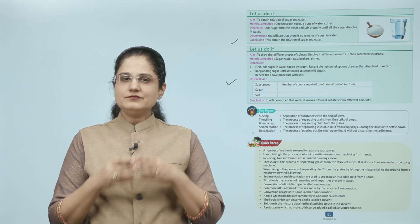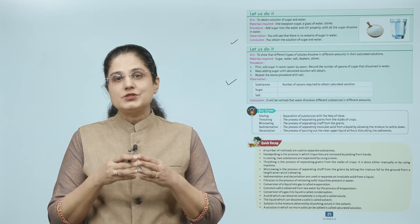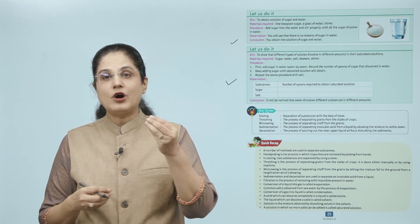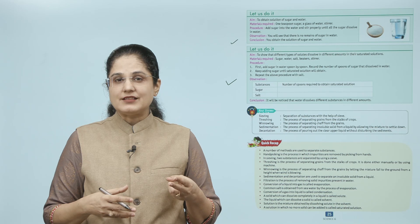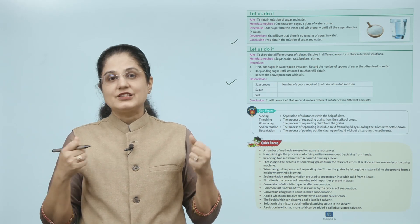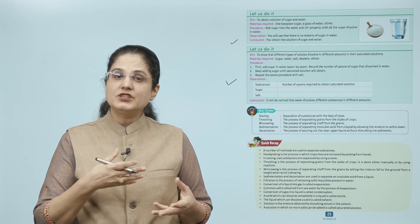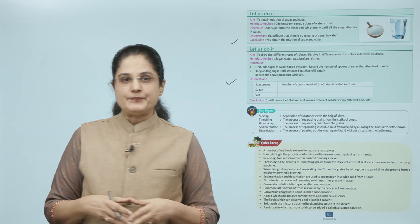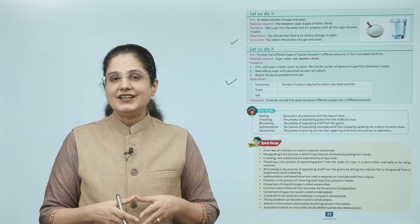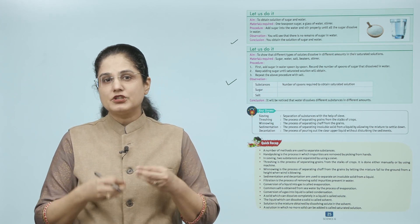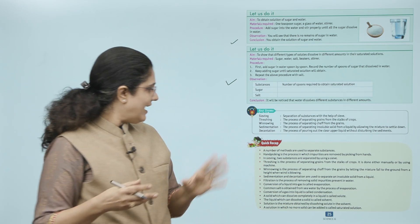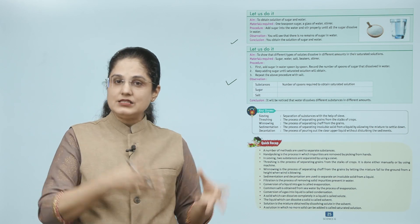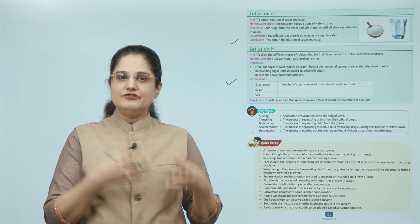Let us take a quick recap. A number of methods are used to separate substances. Hand picking: impurities are removed by hand. Sieving: two substances are separated using a sieve based on size. Threshing: grains are separated from the stalks of crops, done manually or by machine. Winnowing: chaff is separated from grains by letting the mixture fall from a height when wind is blowing.